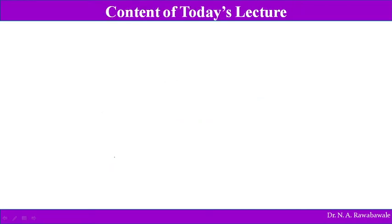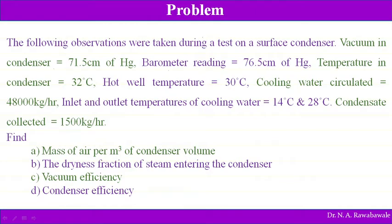Today we will be discussing numericals concerning the condenser. This is the first problem, explained as follows: the following observations were taken during a test on a surface condenser. The test was carried out on a surface condenser with vacuum in the condenser equal to 71.5 centimeters of Hg.